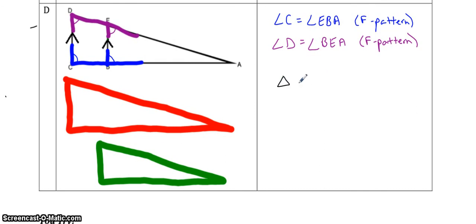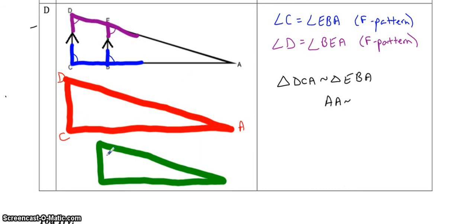That means triangle DCA is similar to triangle EBA, and that's because of angle-angle similarity. If you were drawing them out separately, both triangles share angle A — so one of the two equal angles you could have shown is angle A equals angle A because they're shared. It doesn't really matter; you just have to pick two that are equal. The two F patterns are easy, but this shared angle is easy as well.